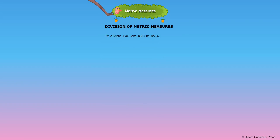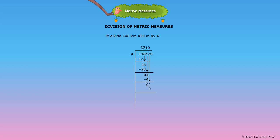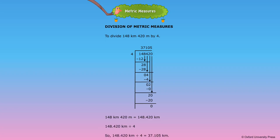Division of Metric Measures. To divide 148 kilometers 420 meters by 4: we know 148 km 420 m = 148.420 kilometers. Dividing 148.420 kilometers by 4 gives 37.105 kilometers.